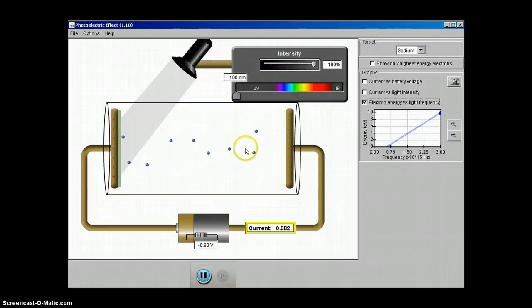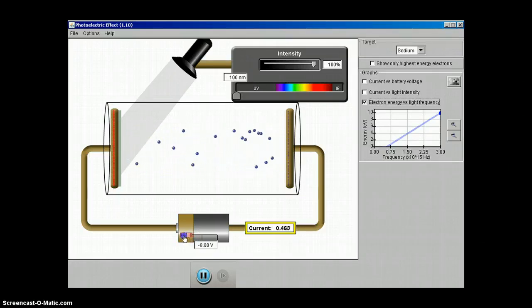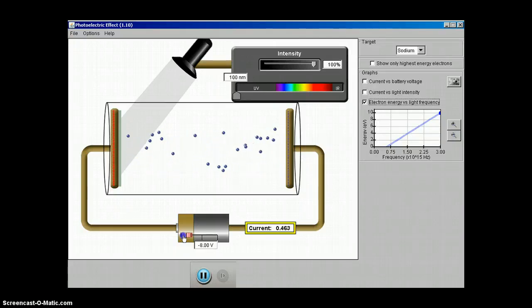Notice how photoelectrons are still hitting the negative plate, which requires a much greater stopping potential. In fact, finally up to eight volts we can get most of the photoelectrons to stop hitting that negative plate, even though we don't get them all.